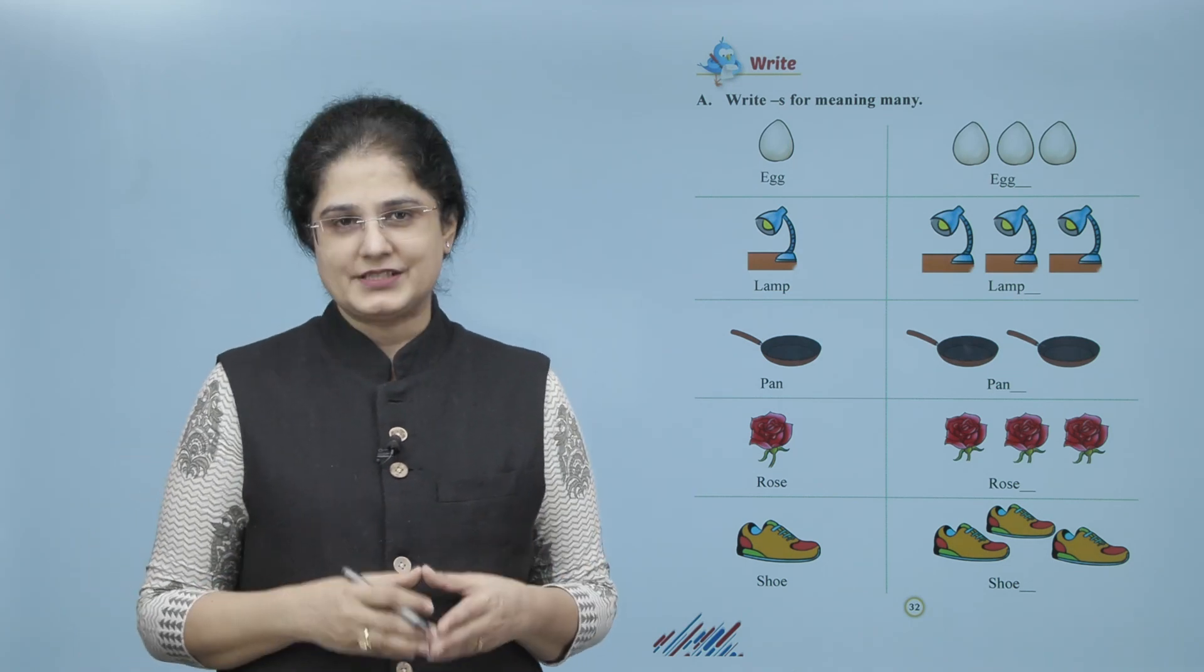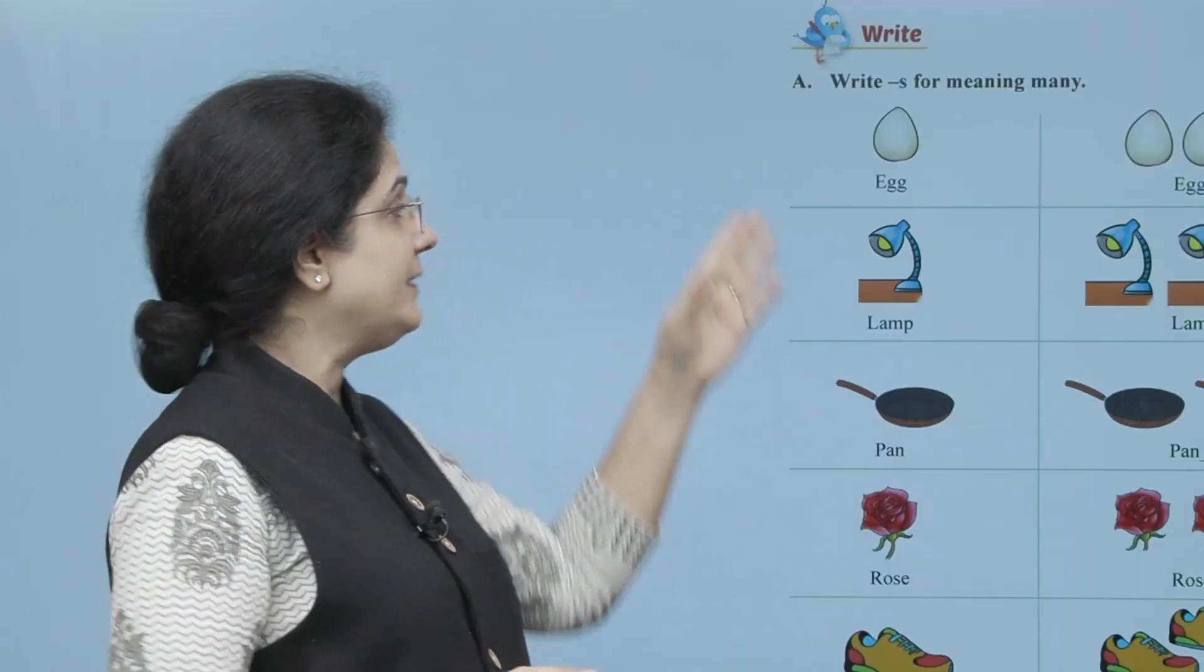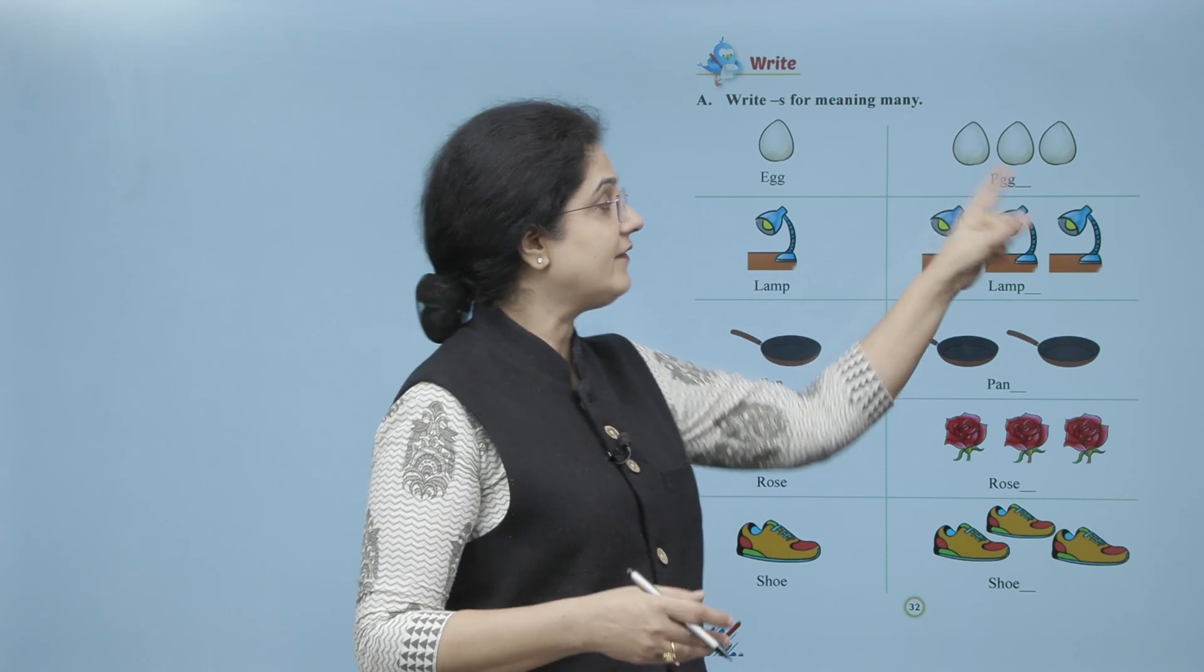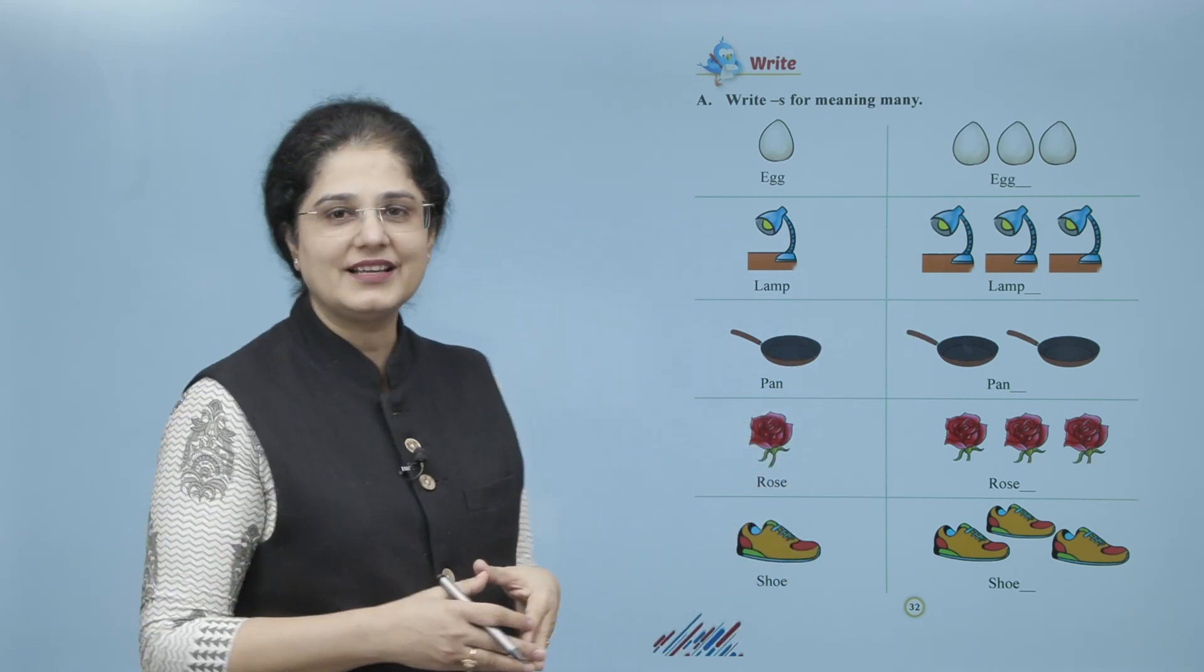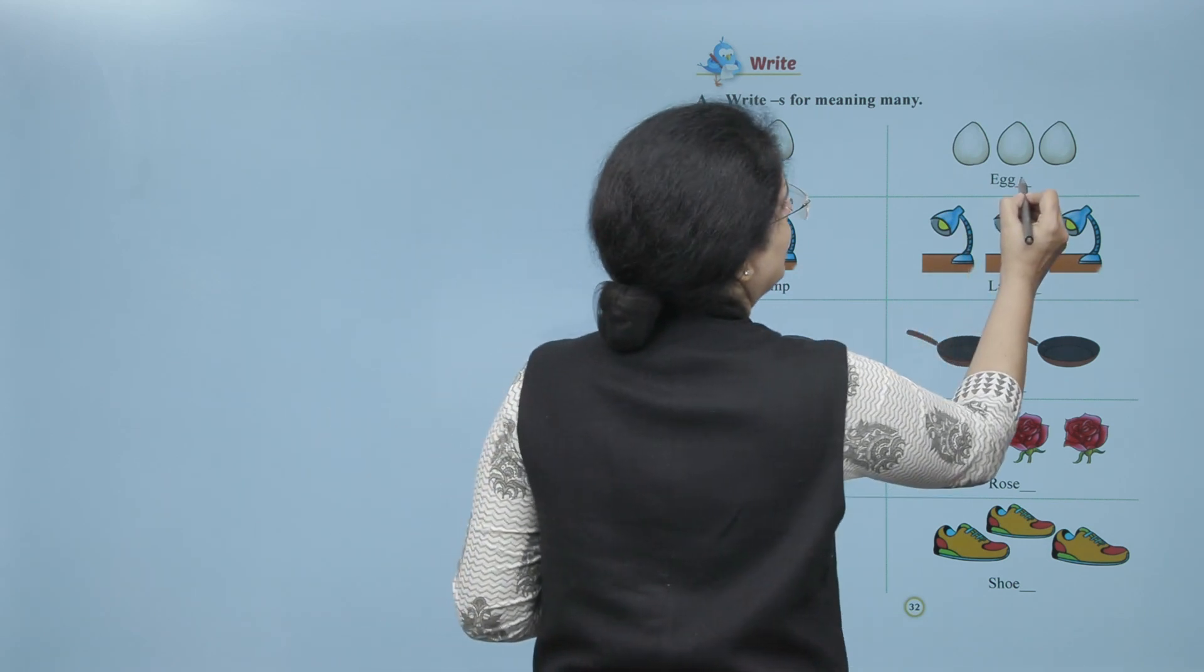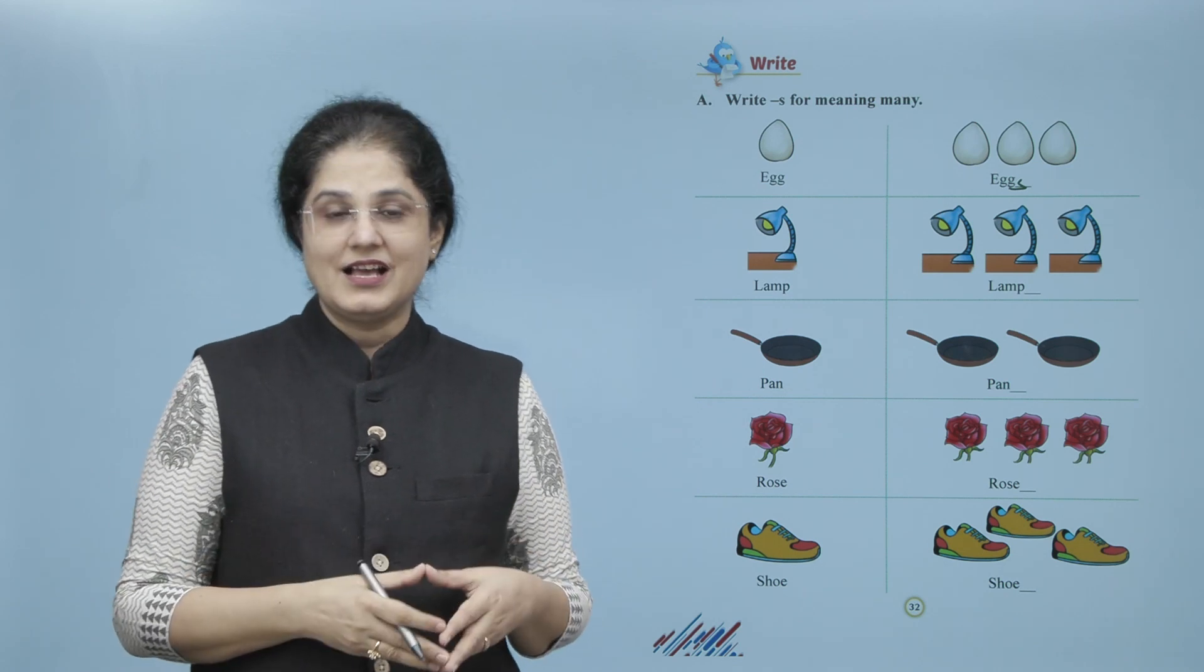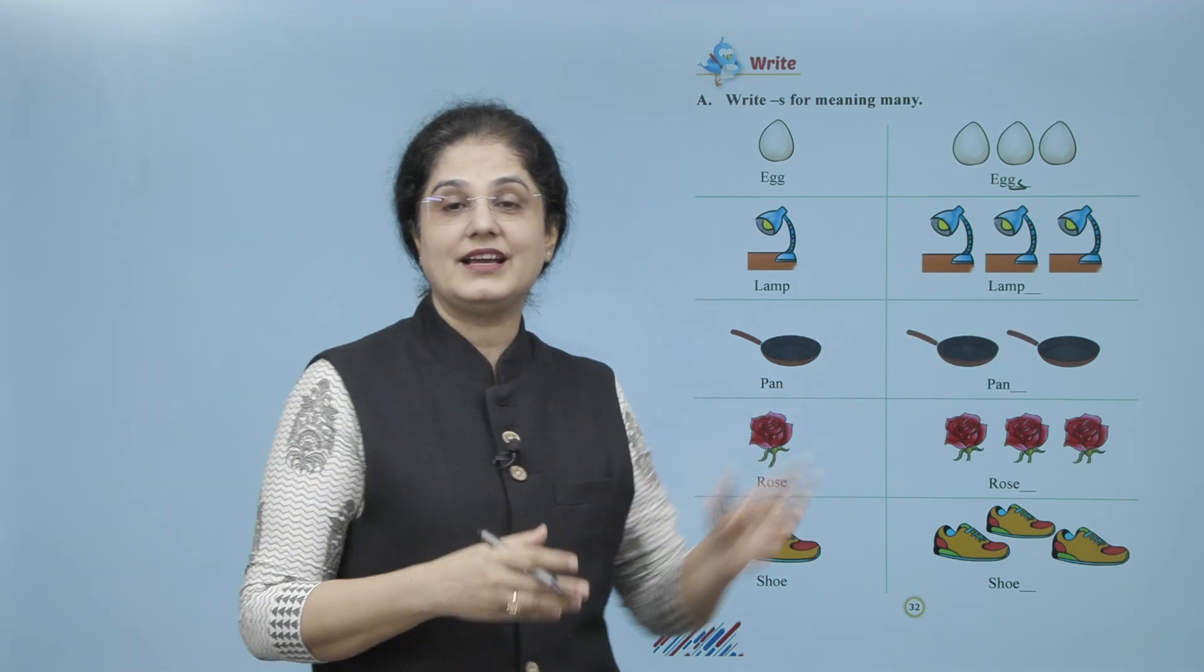Now let us write S for meaning many. So look at this picture, yahaan pe kya hai? One egg. Aur iske saamne wali picture mein kya hai? Many eggs. To hum kya karenge? S likh denge, to wo kya ban gaya? Eggs.